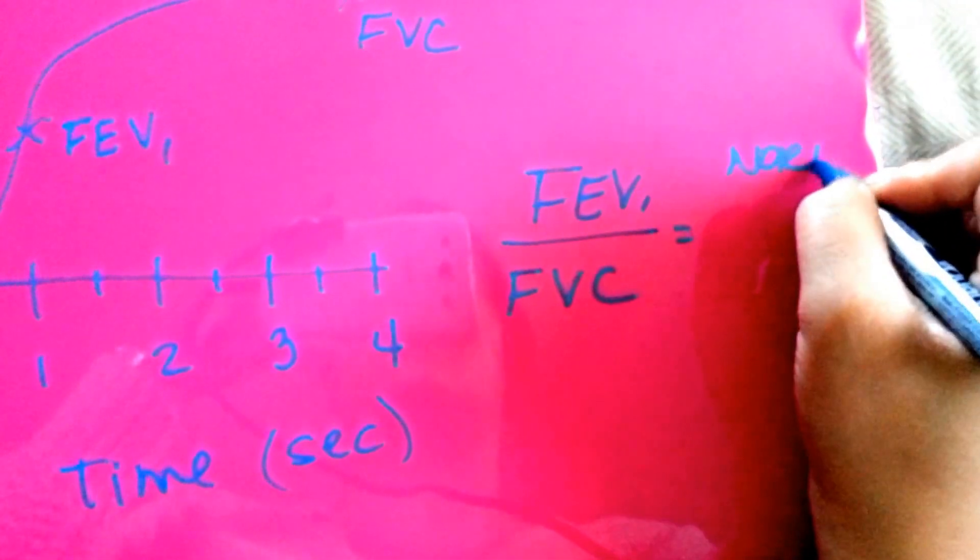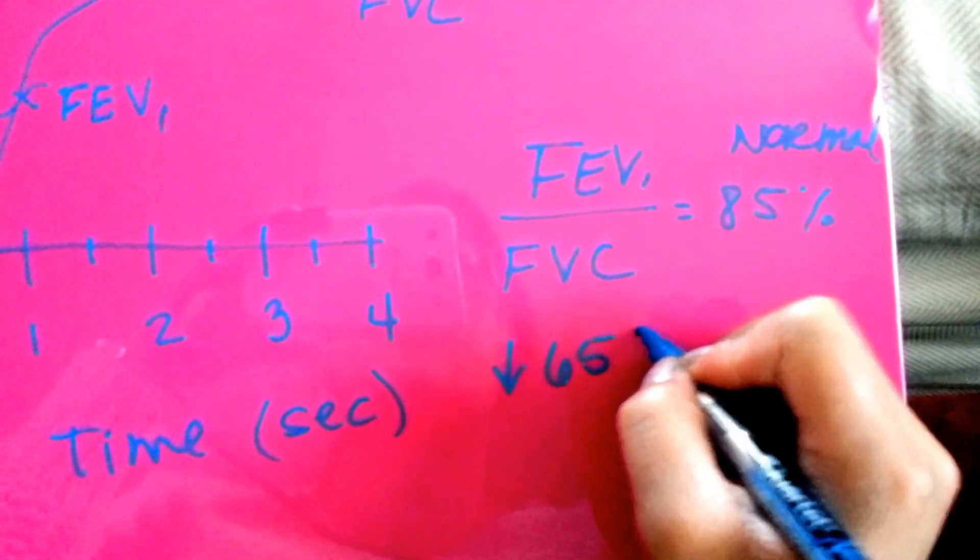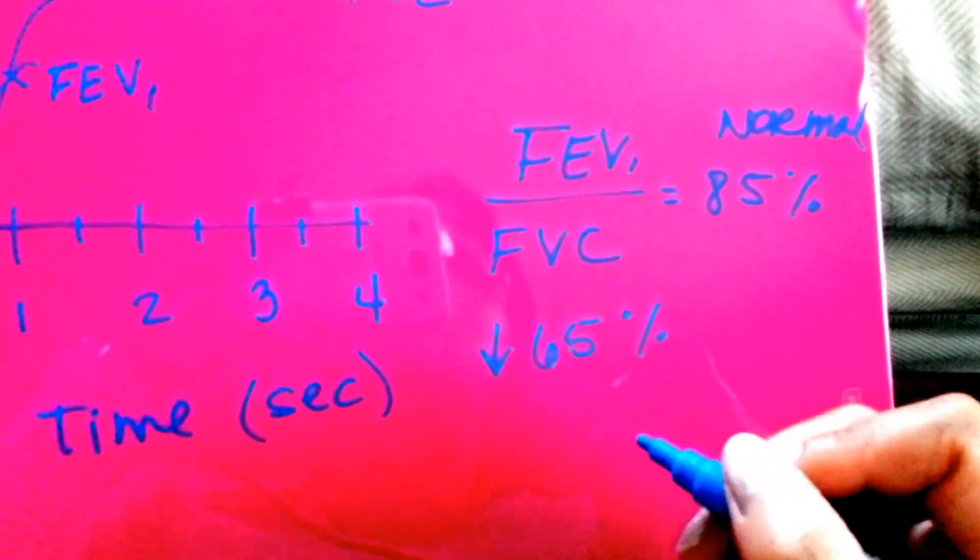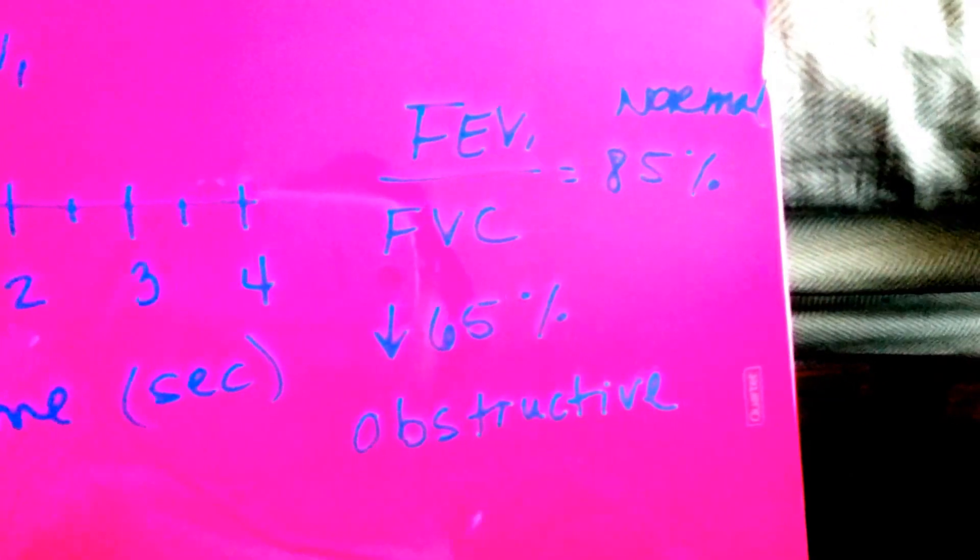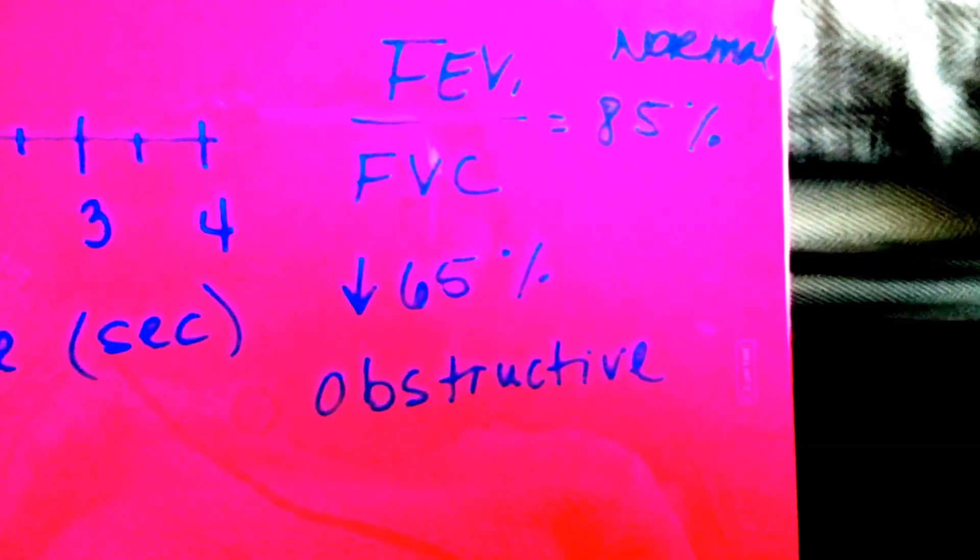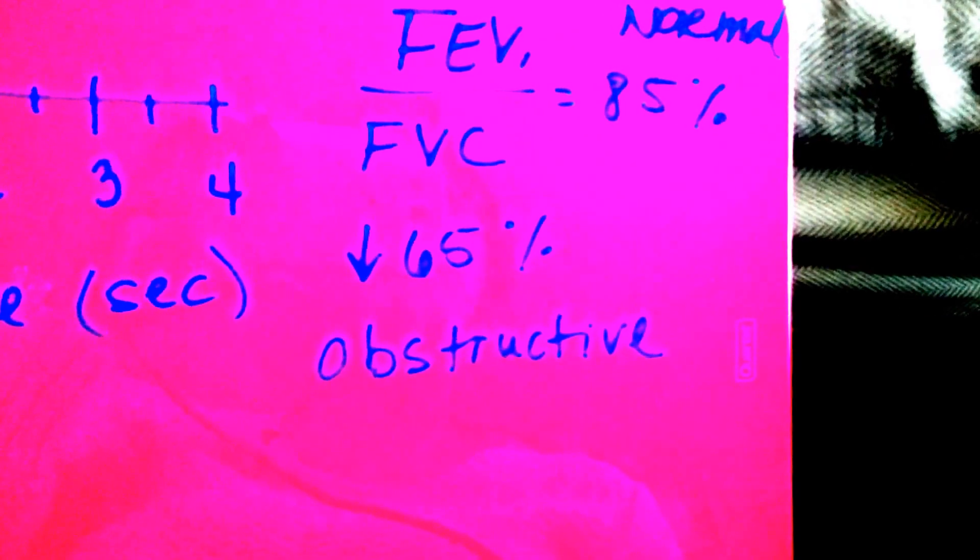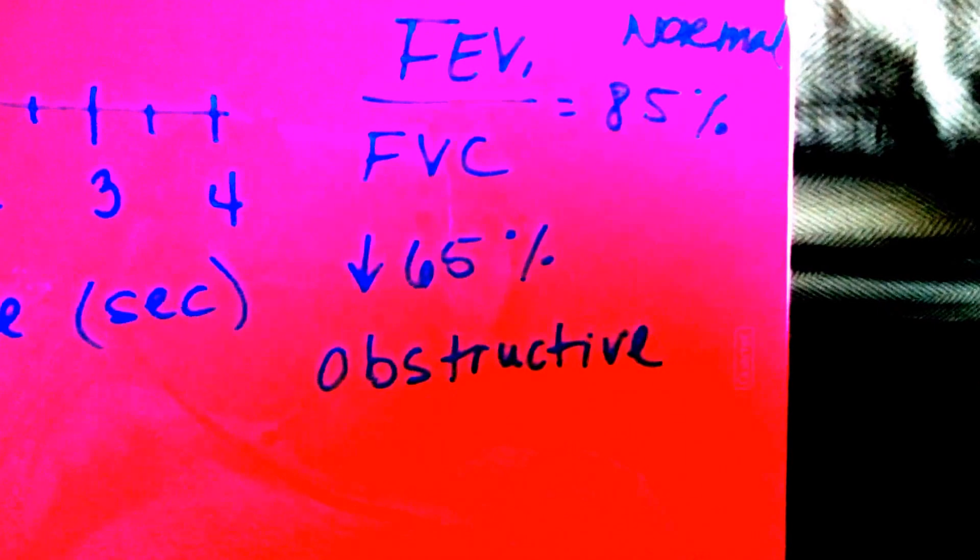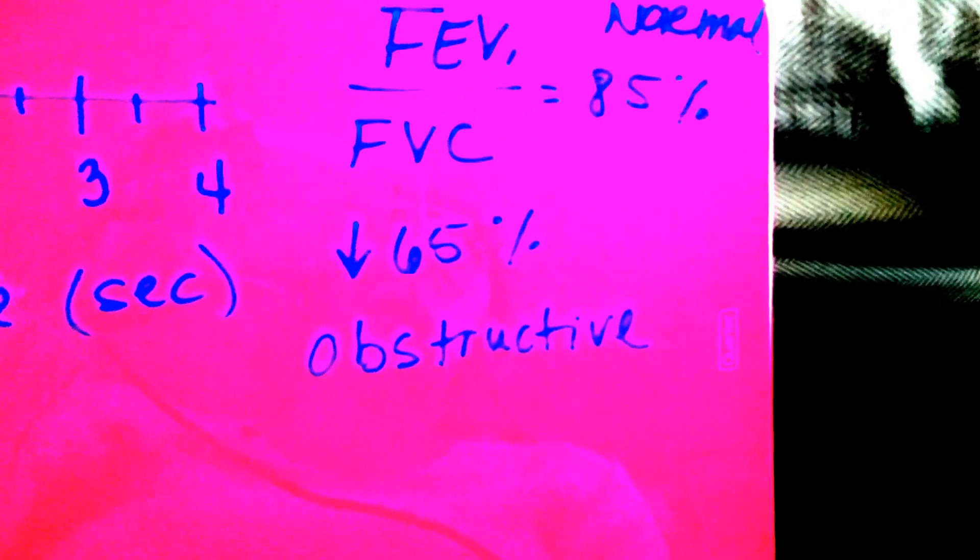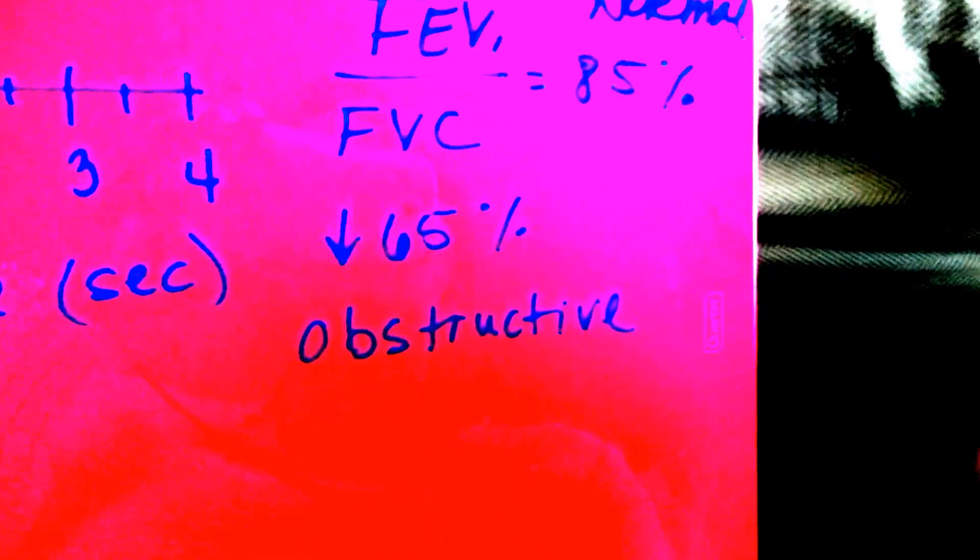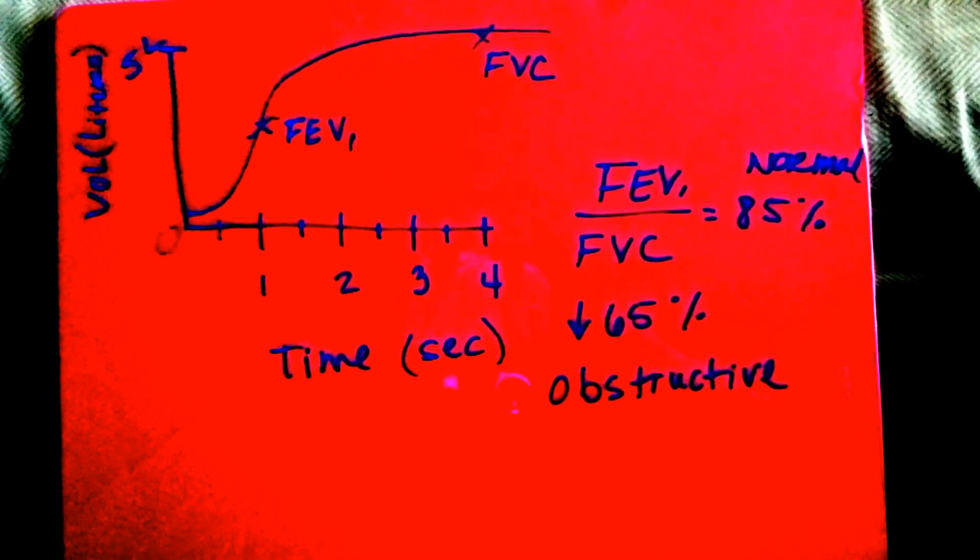Normal is 85%. If we have 65% or below, that shows signs of obstructive. Remember, obstructive is like COPD, emphysema, asthma, bronchitis, and there's an increase in TLC, FRC, and RV. The airway resistance increases, and the airflow decreases. There's an overinflation of the lungs when it comes to obstructive. I'm going to zoom out. There you go. You can take another look of that.